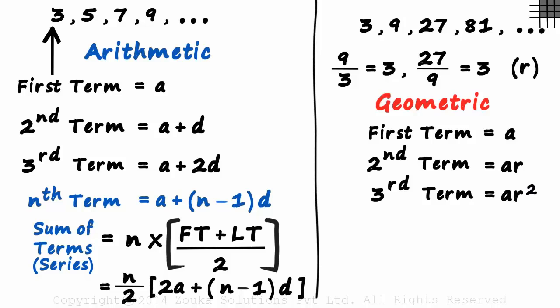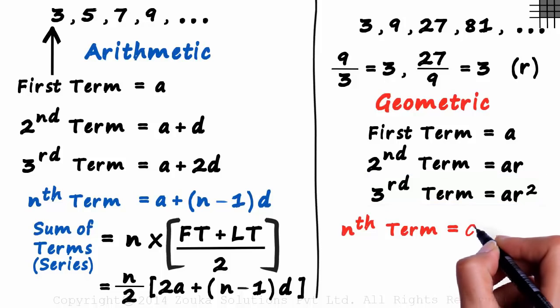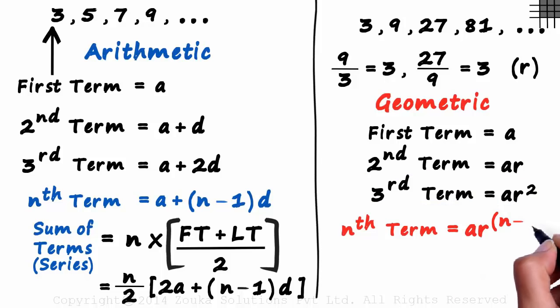And what will be the nth term of a geometric progression? Look at the pattern. Second term R raised to 1, third term R raised to 2. So the nth term will be A times R raised to n minus 1.